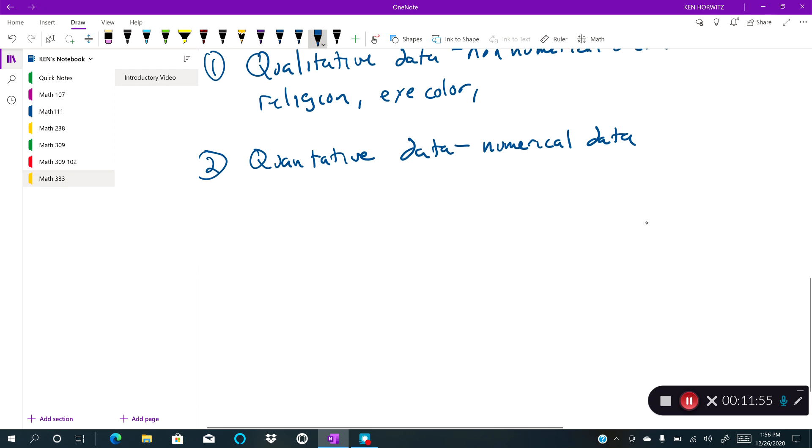And within quantitative data, there are two subcategories. The first is discrete data. And discrete data is countable and finite. For example, if we're talking about your data is eggs, let's say, you could have 20 eggs, you could have 21 eggs, but you can't really have 20 and a half eggs. So it doesn't take into account all the numbers in between 20 and 21. Basically, you jump.